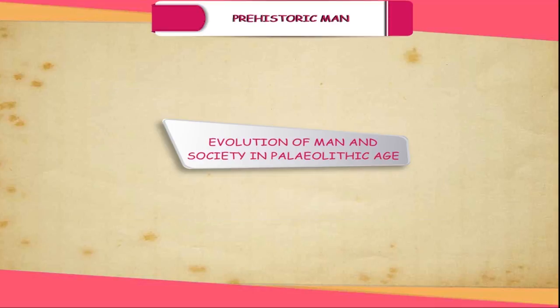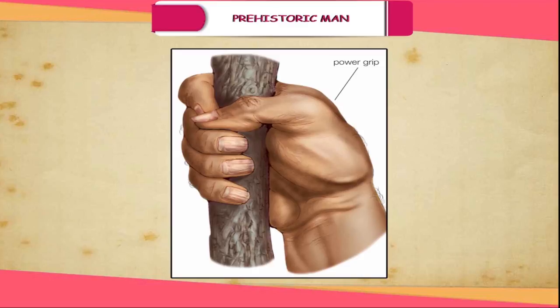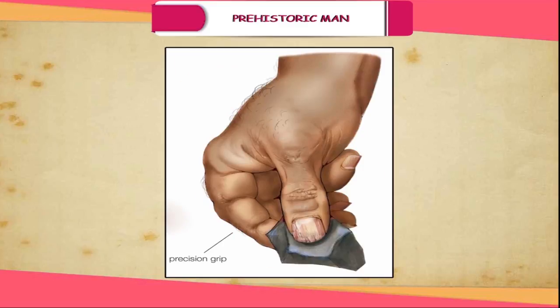Evolution of man and society in the Paleolithic age: During this period, the man's brain developed considerably after using stone implements. A modern man has two types of grips: A) power grip, B) precision grip. It is the latter grip that sets man apart from other animals including apes. The fully developed, opposable thumb increased the accuracy of man's work.